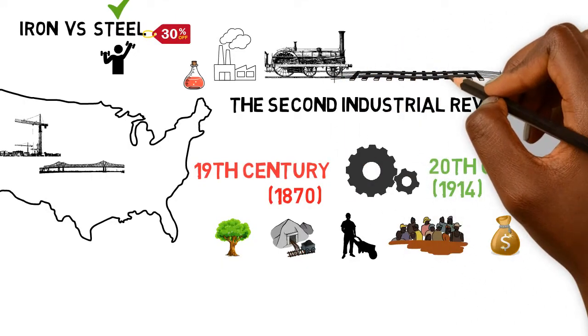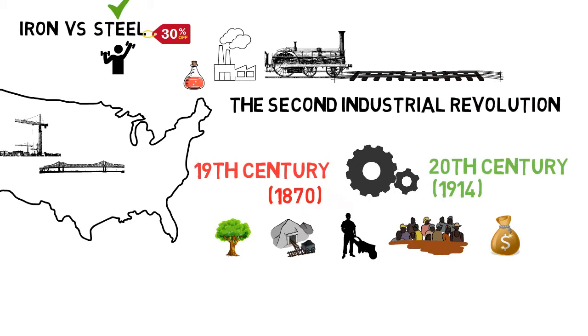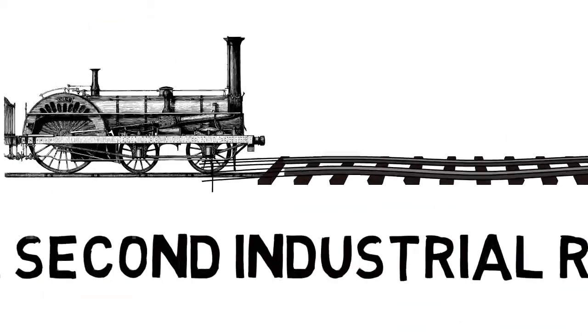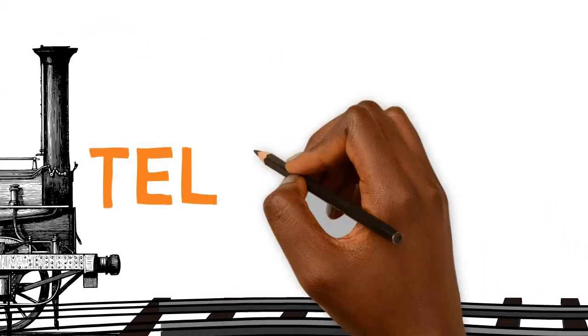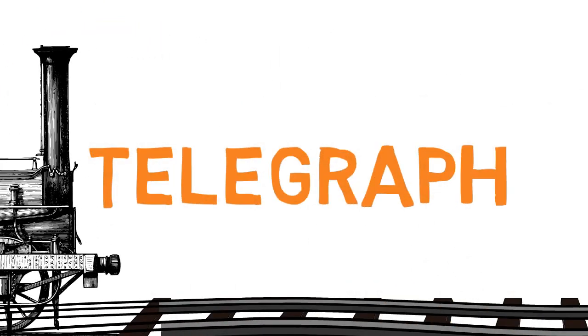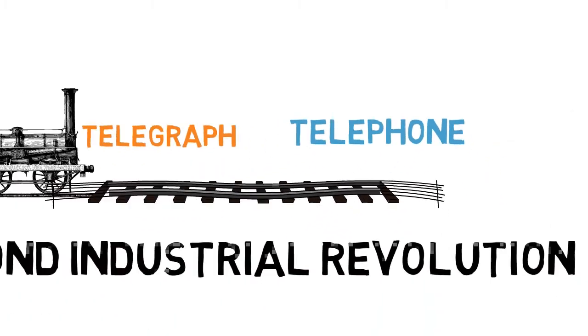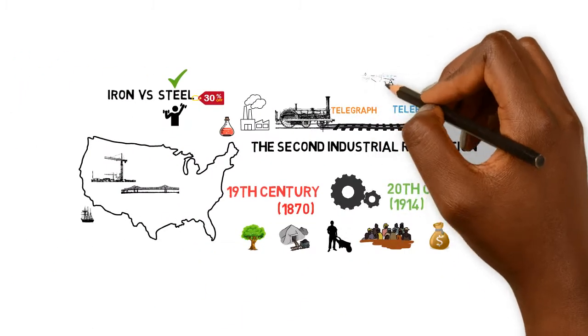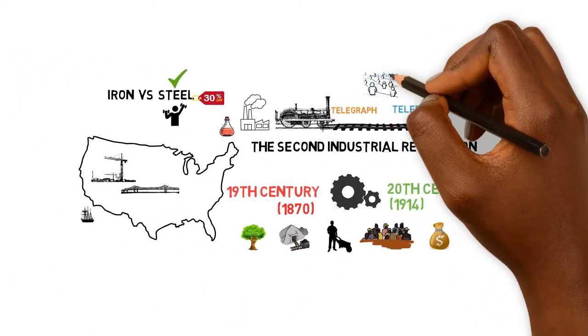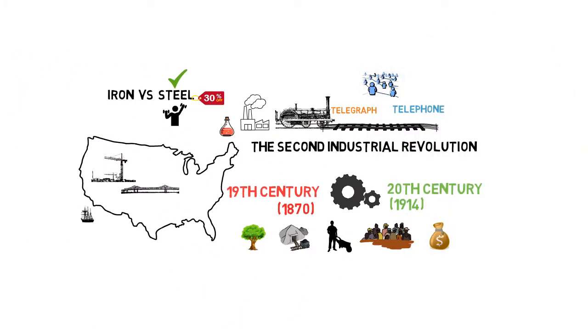The growth of the railway was also inextricably linked to the growth of the telegraph machine and later the telephone. This then ushered in the era of instant communication.